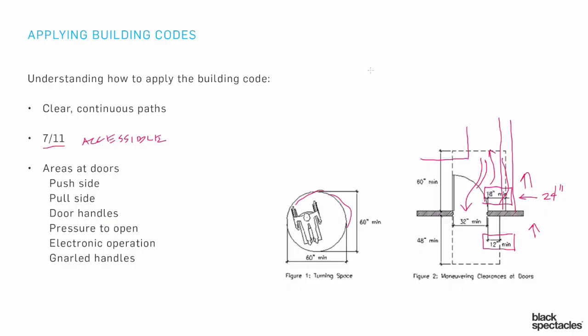Another thing to say about doors: most everybody would realize that if you're going to be talking about an accessible door, it's going to be a 36-inch door or bigger — but 36 is the standard. So we think about 36, but then we look and it says 32 minimum.